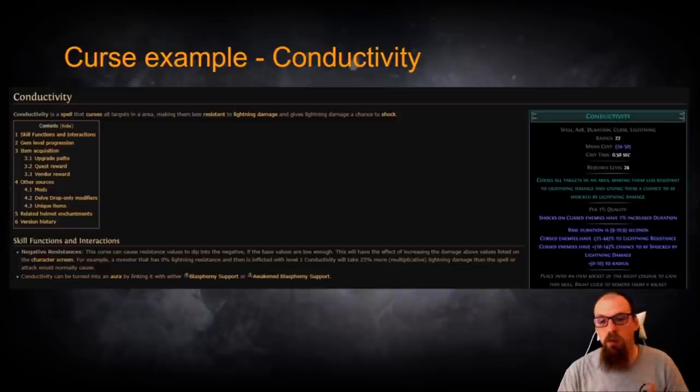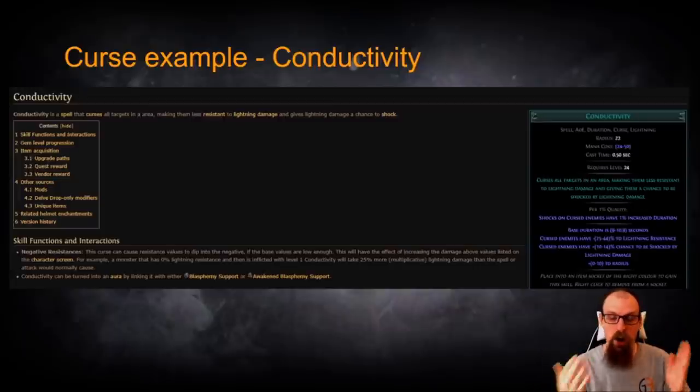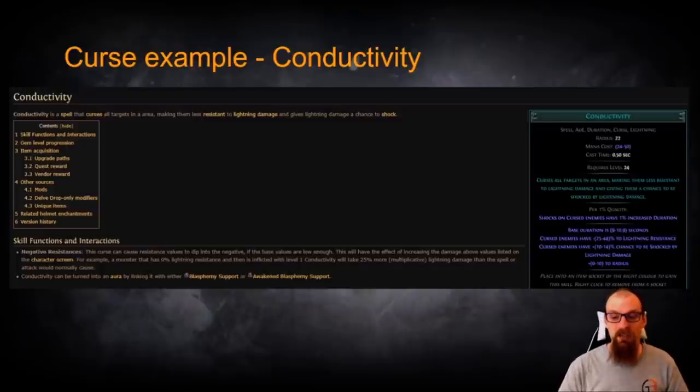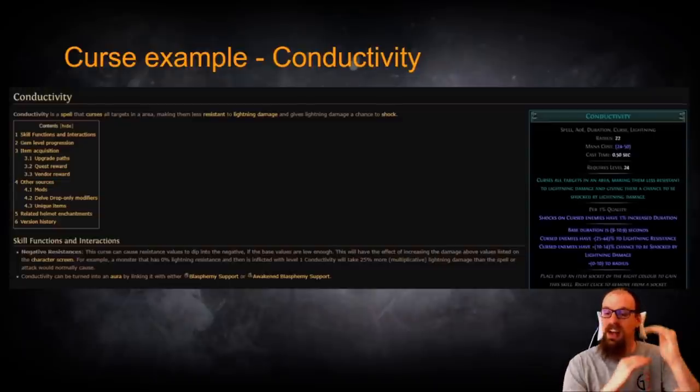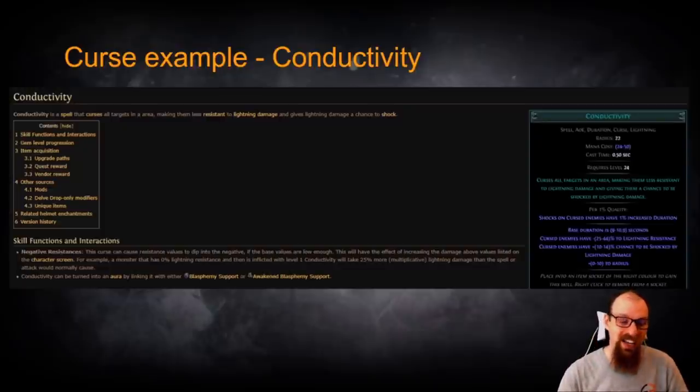You could if you wanted to apply both Elemental Weakness and Conductivity to reduce all Elemental resistances at level 1 off of Elemental Weakness by 20% and then at level 1 from Conductivity it would reduce Lightning Resistance by another further 25%. So between Elemental Weakness and Conductivity you've now pushed something that would have normally had just 0% Lightning Resistance down to negative 45% Lightning Resistance which is all going to act as a more multiplier for your Lightning Damage that you're hitting with.